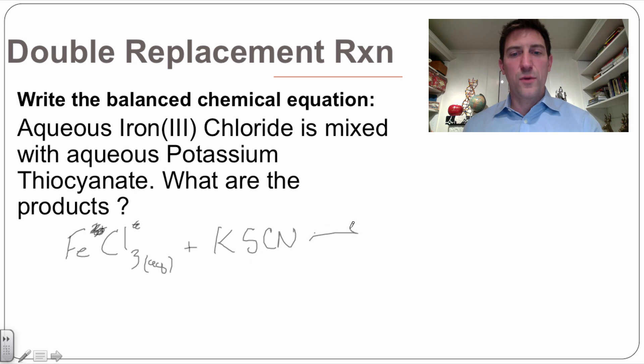When these react together in a double displacement reaction, we need this iron to come over here and break this positive potassium off of there and attach itself to the thiocyanate. So SCN plus, so the iron came over here and attached to this. So then that means the potassium had to come over here. We've got KCl.